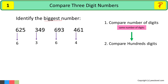In these four numbers we have 6, 3, 6, and 4 at the hundreds place. Out of these, 6 is the biggest number, so 349 and 461 are smaller numbers. We will not compare them again — remember, we need to find the biggest number, so we are ignoring the smaller numbers.